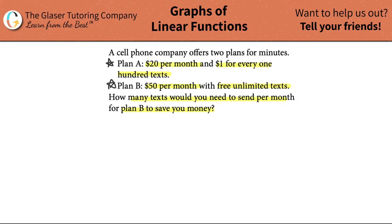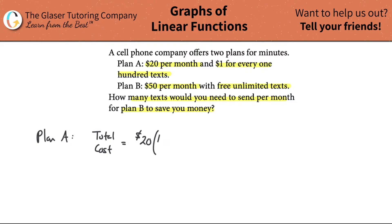What we're going to do is create two equations for both plans. Let's create an equation for Plan A. The total cost of Plan A would be twenty dollars per month multiplied by the number of months — because if you had the phone for two months, it would have cost you forty dollars. Then plus one dollar for every 100 texts. The best way to handle this is to convert: instead of saying one dollar per 100 texts, figure out how much it costs per single text.